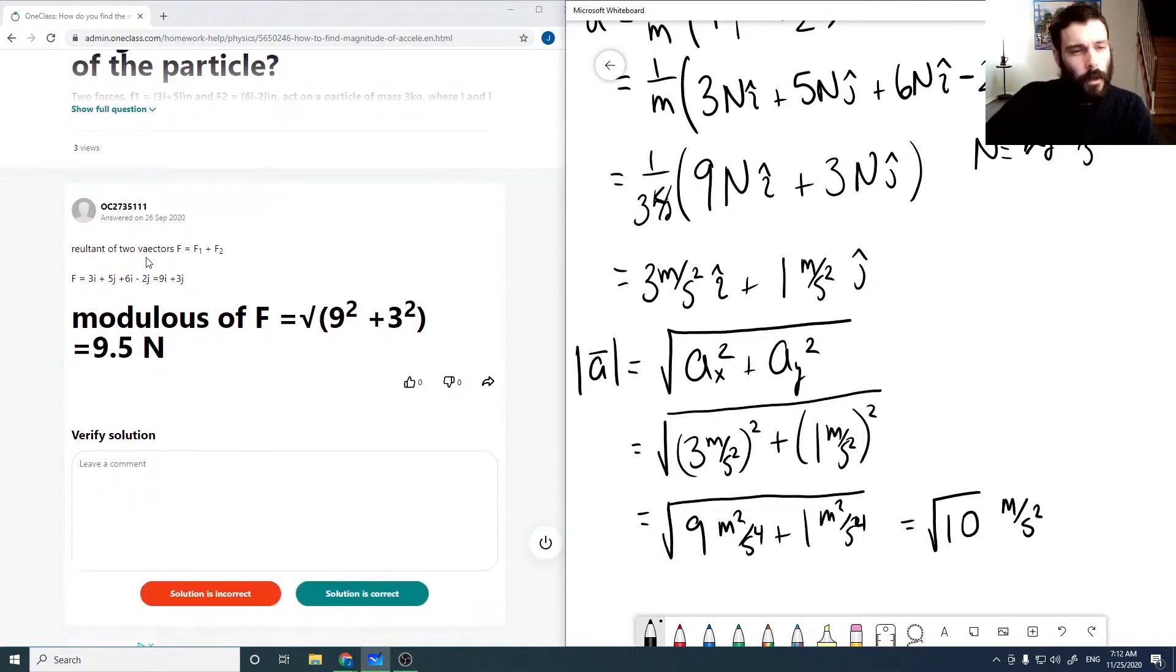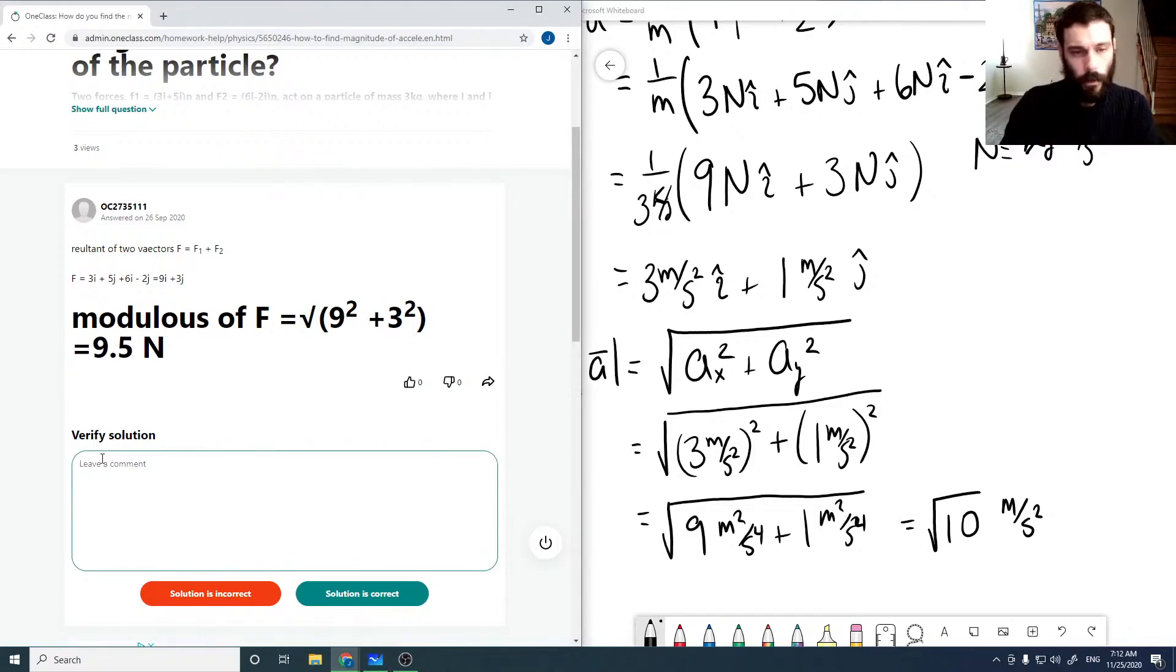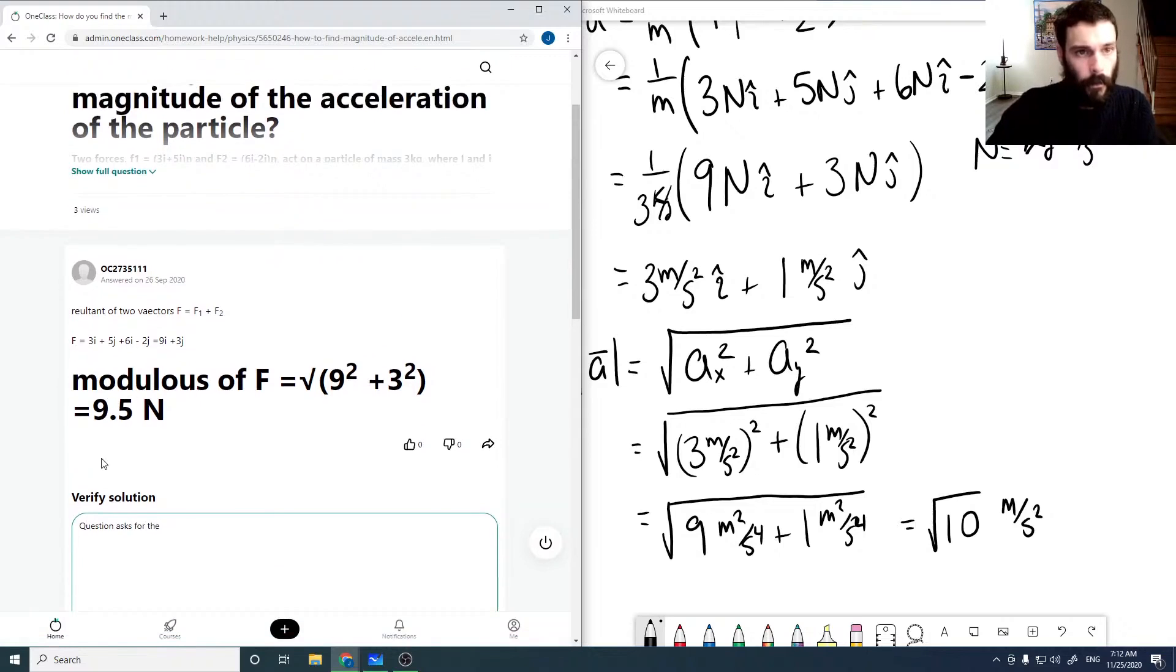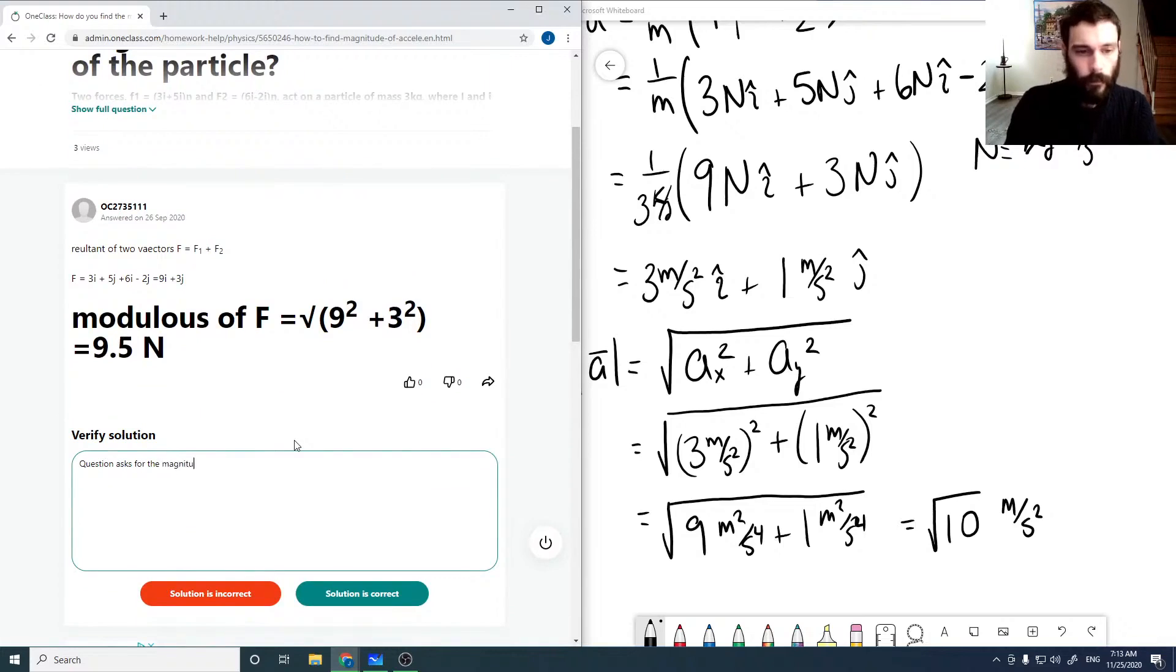Okay, so the solution given here is just for the force. So technically that's correct, that is the correct force modulus. But the question asks for the magnitude of the acceleration, not force. Magnitude of acceleration is square root of 10 meters per second squared, and I'm just going to say it's not correct.